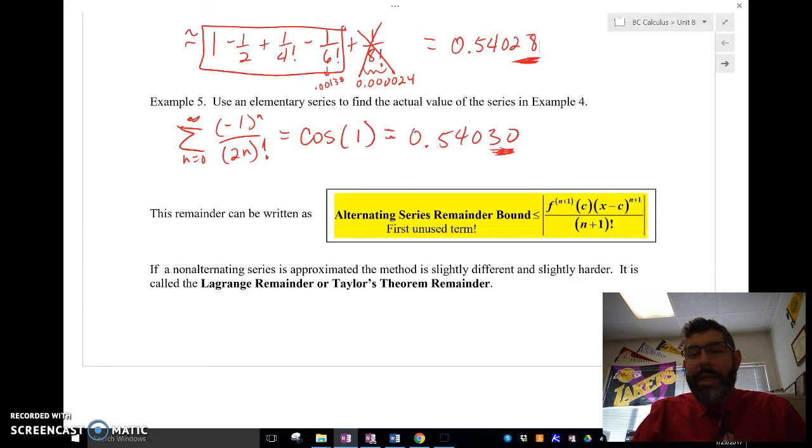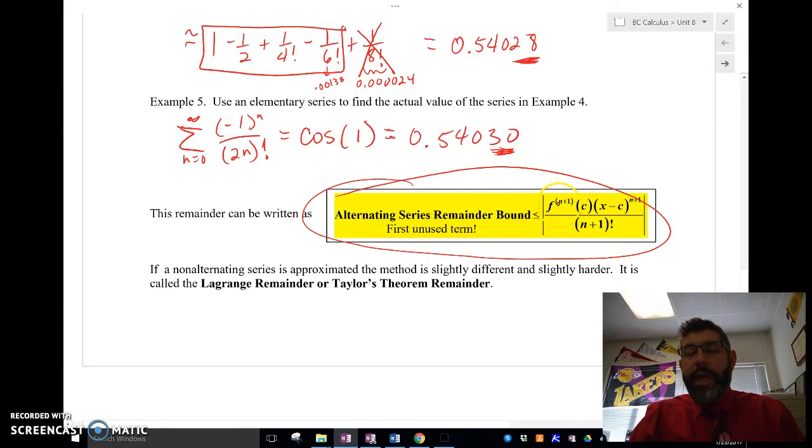It's going to be less than or equal to f of the n+1 derivative, (x-c), if it's centered around c, to the n+1 over n+1 factorial.